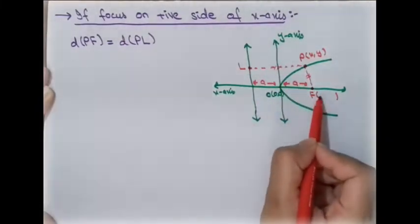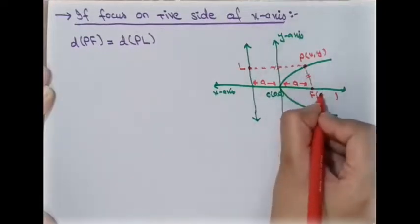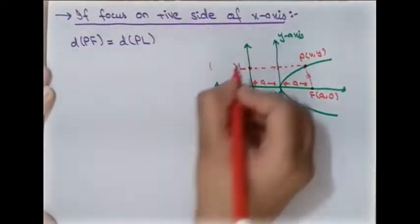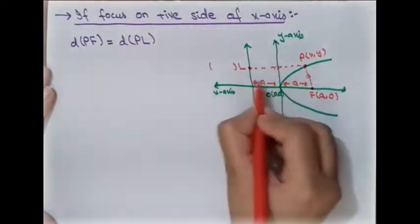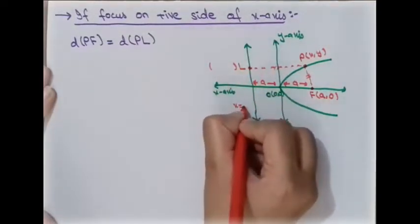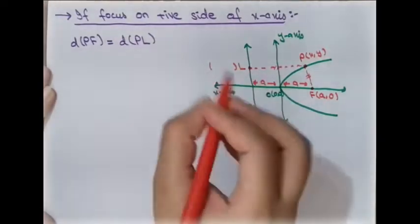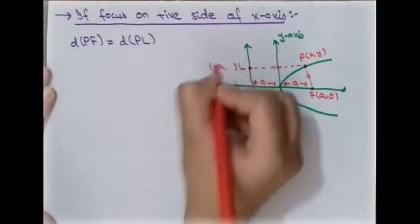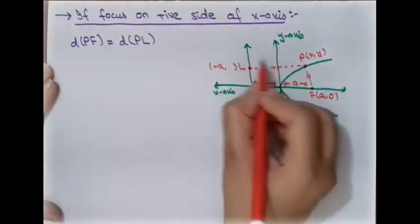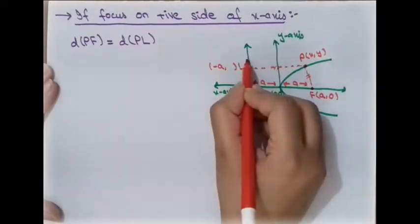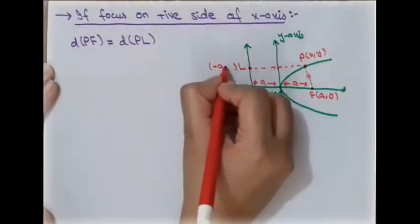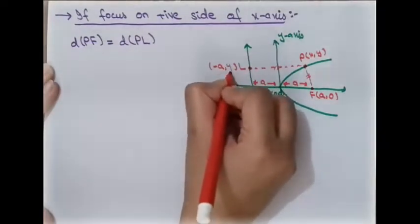On the X-axis, the focus has coordinates (A, 0). Since the directrix is on the other side at the same distance, its equation is x = −A, and the point L on the directrix has the same Y-coordinate as P, so L is (−A, y).